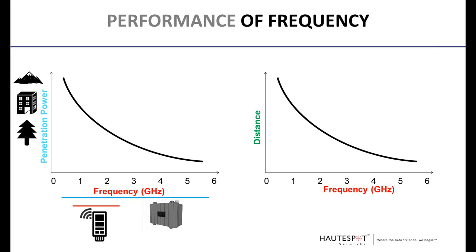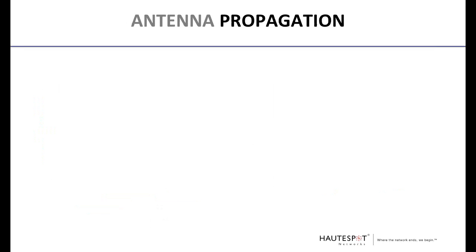The maximum potential distance of wireless links also decreases as you move into higher frequencies, as shown on the right graph. These variables are managed by the transmission power of the radio and the antennas selected — so these are generalizations to give you a frame of reference.